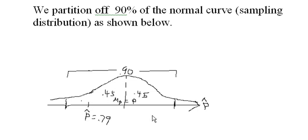And we hope that our particular sample will land somewhere between here and here. In fact, we're 90% sure that it will. We're 90% confident that it will, that 0.79 will be between here and here.